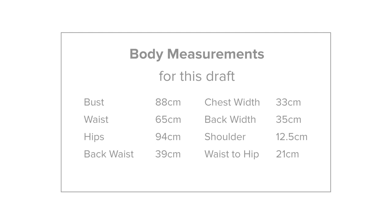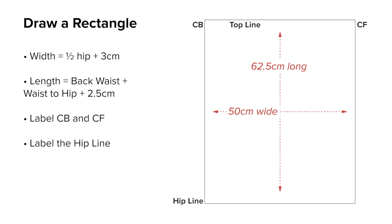I am using these measurements for this draft. Draw a rectangle. Make the width equal to half hip plus 3 centimeters. Make the length equal to the back waist plus the waist to hip measurement plus 2.5 centimeters — a little more in larger sizes. The waist to hip is usually between 21 and 23 centimeters down from the waist, or the level of your maximum hip measurement.